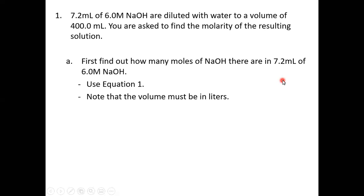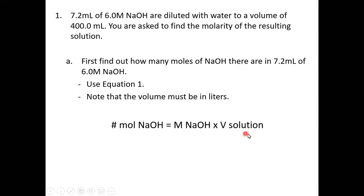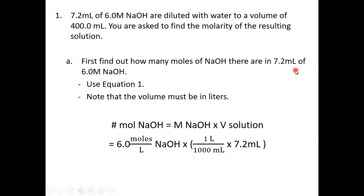Our first question gives us a 7.2 mL aliquot of 6 molar sodium hydroxide, which we're diluting to a total volume of 400 mL, and we want to know the molarity of the resulting solution. To find molarity we need to know the moles, so we use equation one — remember the volume has to be in liters — and we multiply the molarity of NaOH by its volume to find moles of sodium hydroxide. Once we have the moles we can find the molarity.